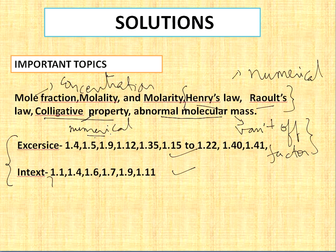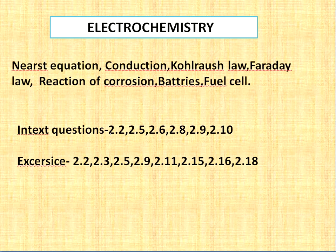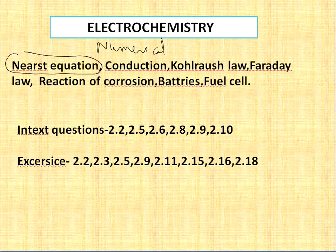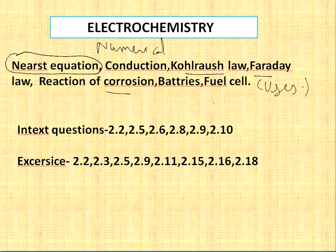The second chapter is Electrochemistry, which is a chapter of numericals. The Nernst equation is very important — its derivation is important. Faraday's law numericals can also come. Topics include corrosion, batteries, and fuel cells — their uses are important. For example, what is the use of a lead storage battery. Please refer to the new NCERT book only.